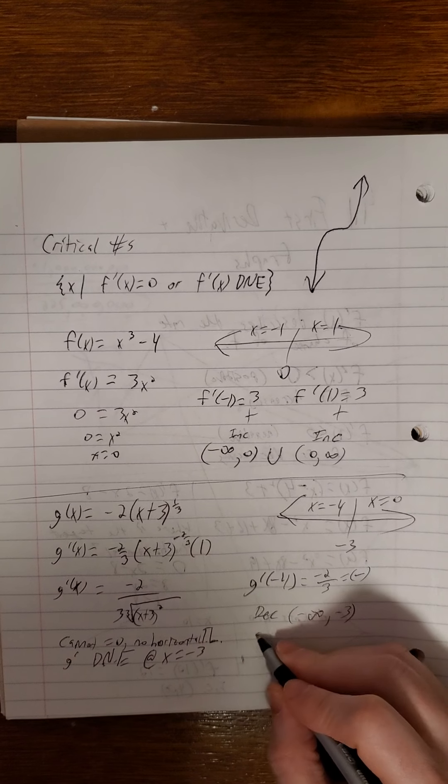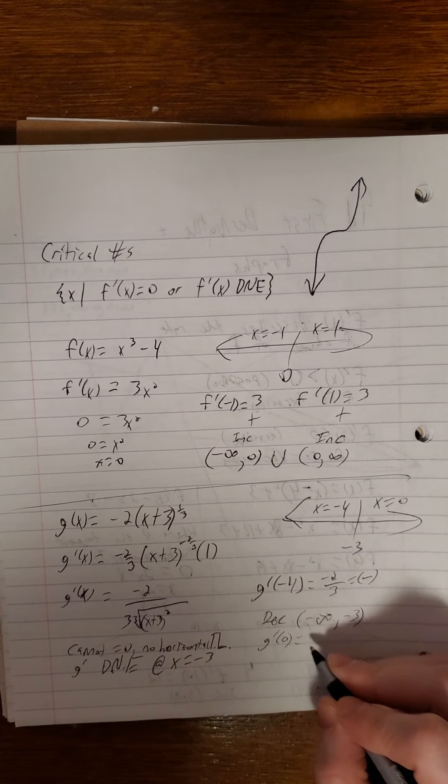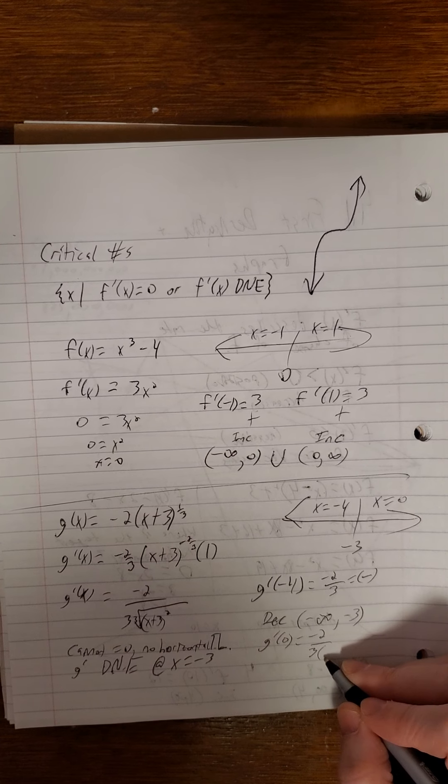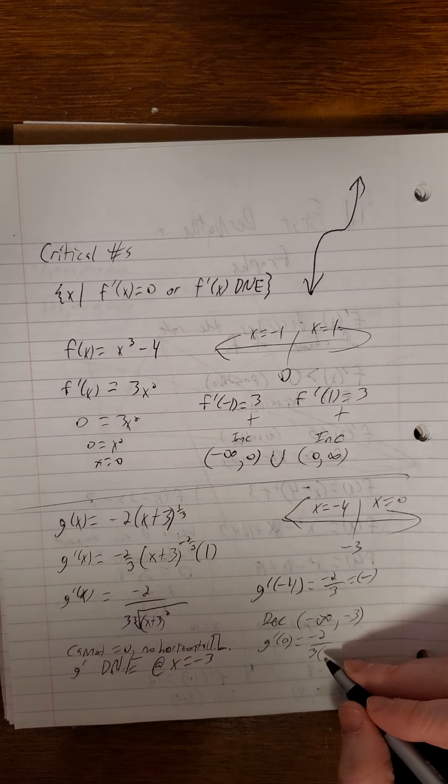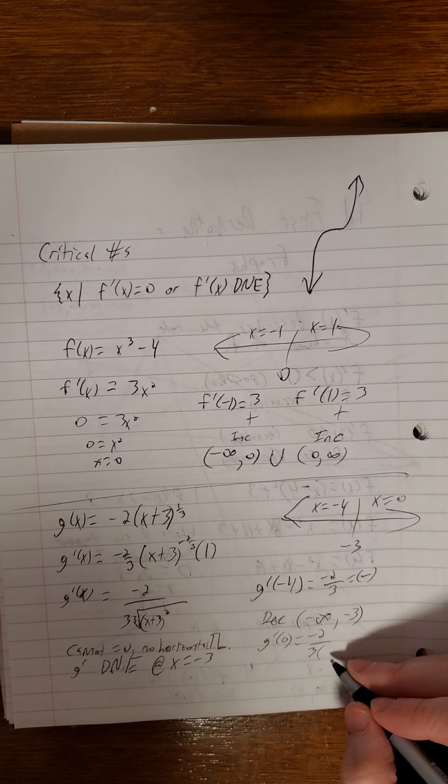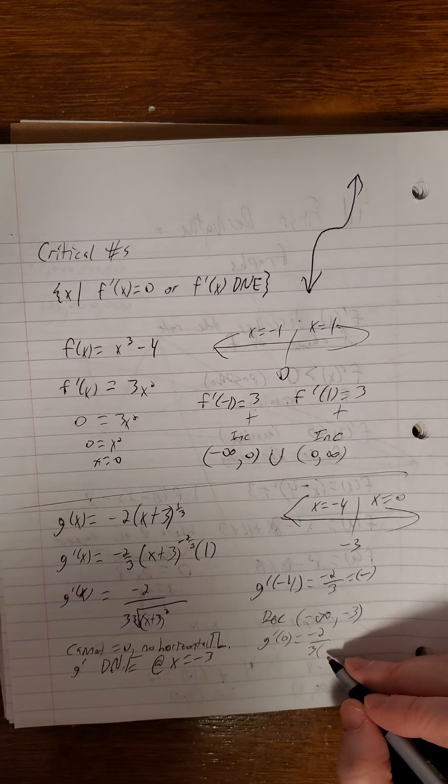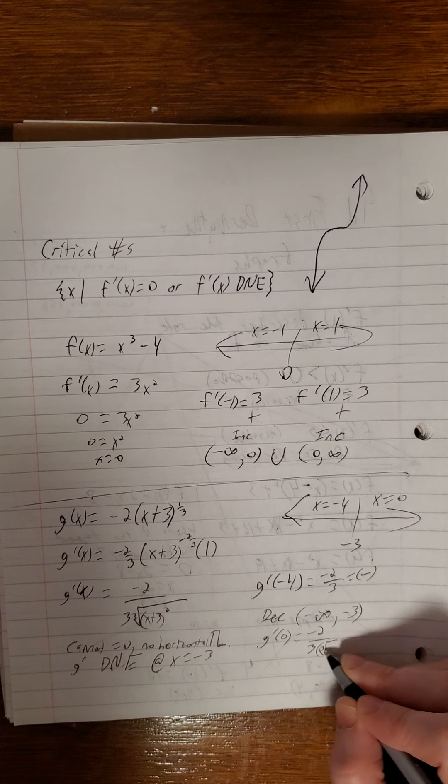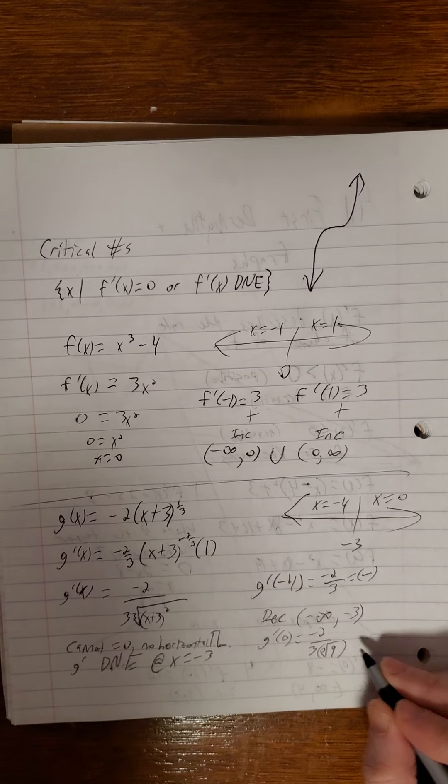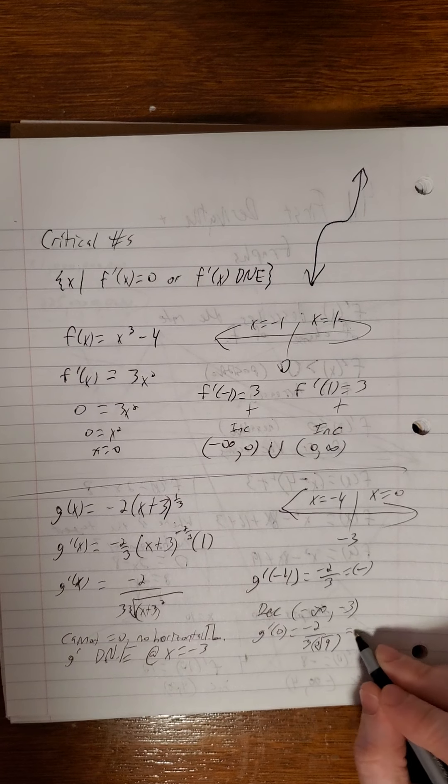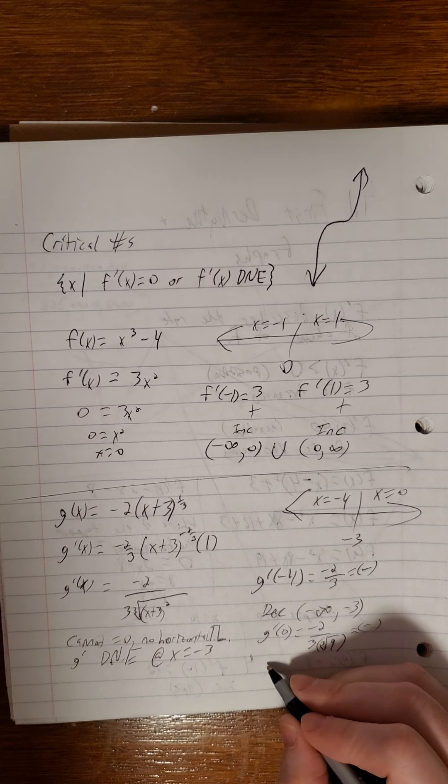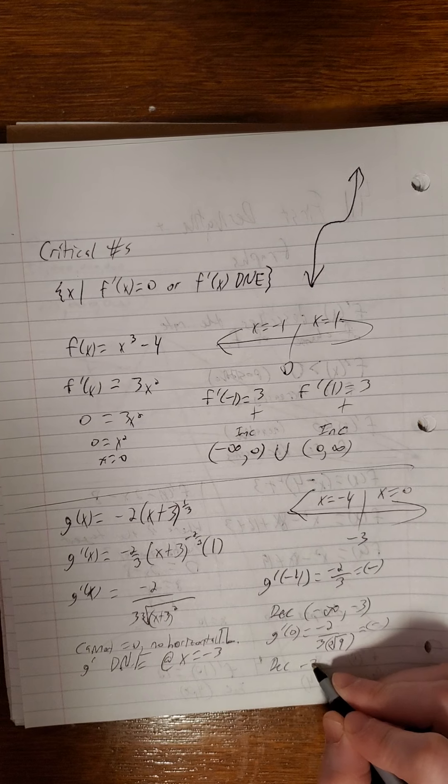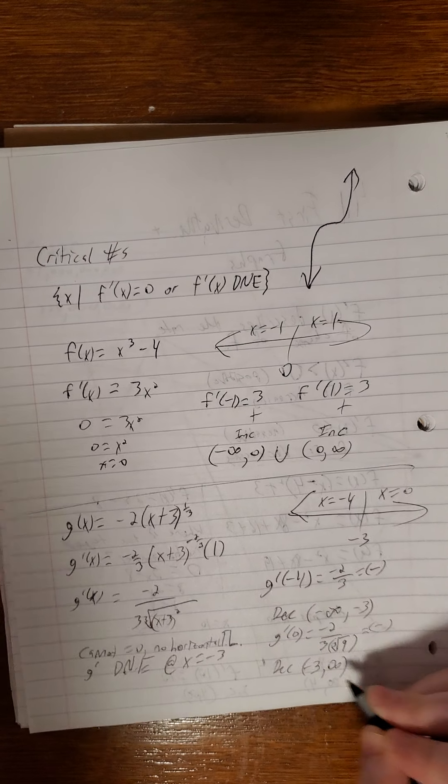Testing out the 0. G prime of 0. We have a negative 2 over 3 times 0 plus 3 is 3, 3 squared is 9. Cube root of 9 is just a cube root of 9. There's no simplifying to be done there. Negative over positive is still a negative. So we're also decreasing negative 3 to infinity.